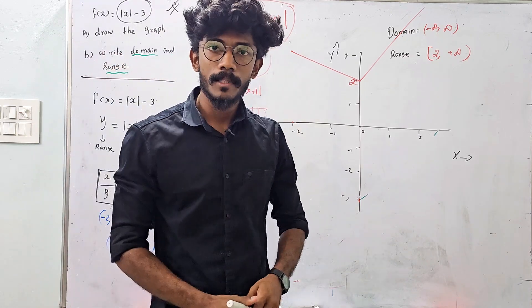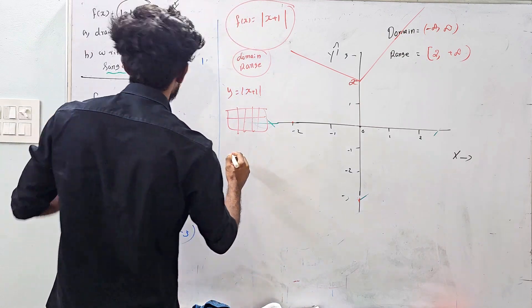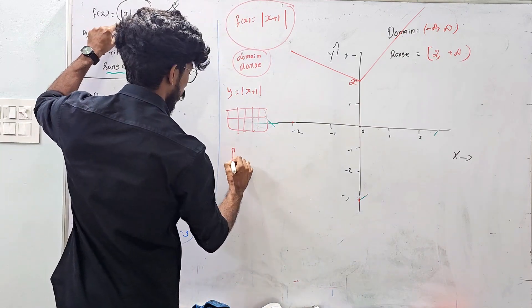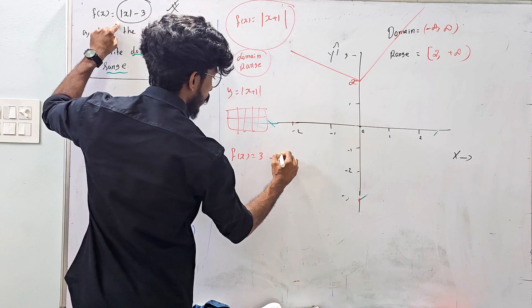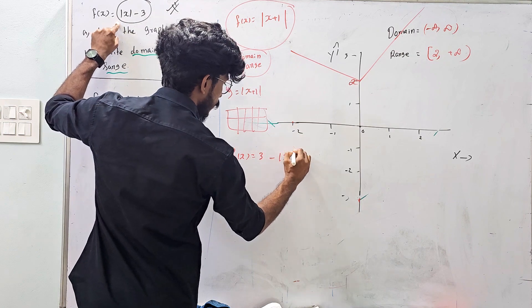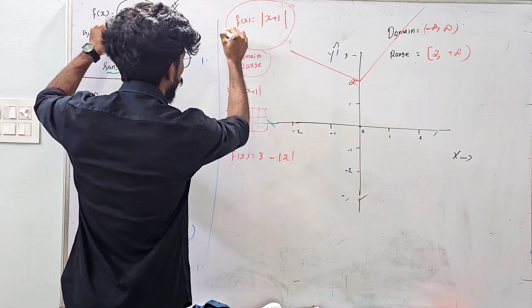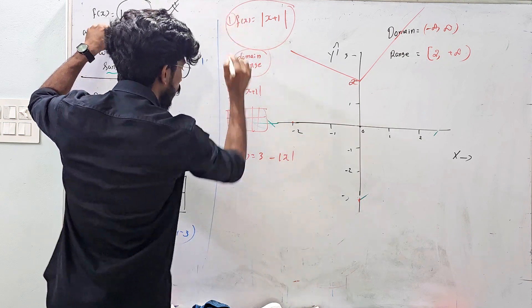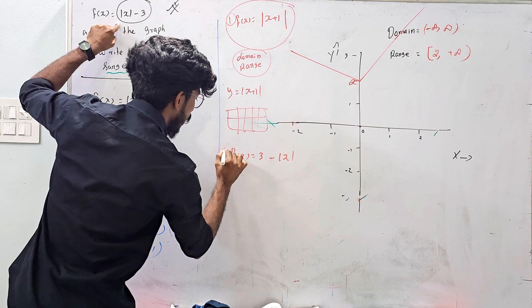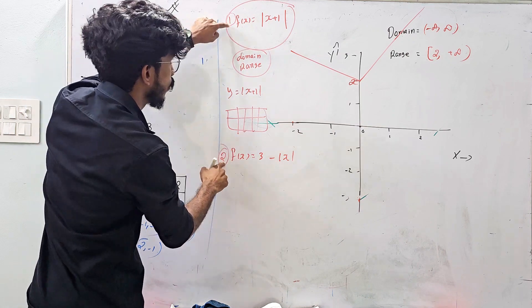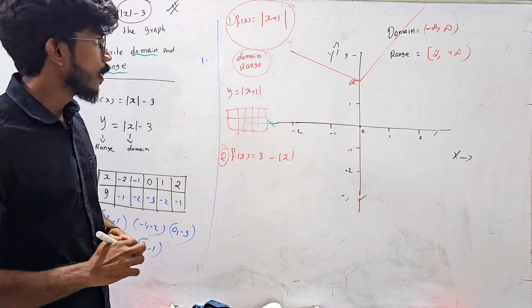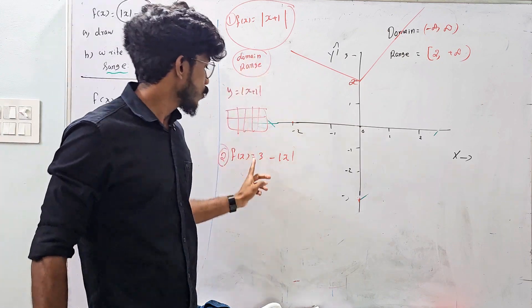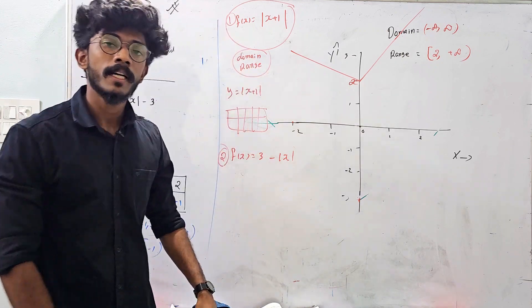Let's look at the model exam question. f of x is equal to 3 minus mod x. This is question one and question two. Please comment. Domain and range — is that clear?